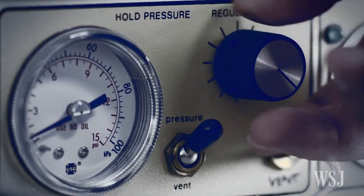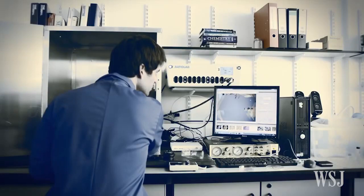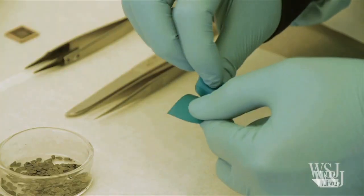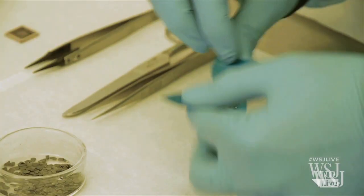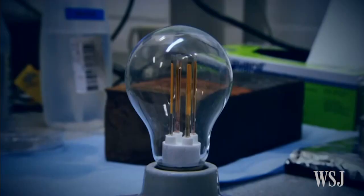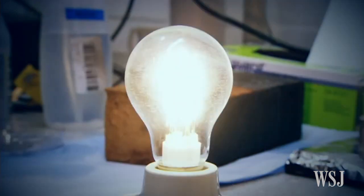Earlier this year, scientists at Manchester University, where graphene was discovered, said they had developed a light bulb whose filament was coated in a thin layer of graphene. The dimmable LED light bulb is supposed to last longer and be more energy-efficient than conventional lights. It's expected to be on British shelves in a matter of months, according to the university.